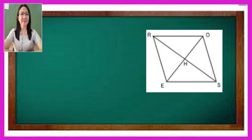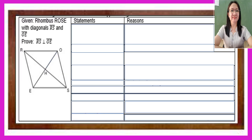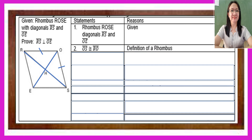Now, to avoid confusion, let us prove the perpendicularity between the diagonals of a rhombus. Let us have rhombus R-O-S-E with diagonals RS and OE. We are going to prove that diagonal RS is perpendicular to diagonal OE. We start with the statement: rhombus ROSE with diagonals RS and OE — this is the given. Then we can state that segment OS is congruent to segment RO, as these are sides of the rhombus, by definition of rhombus.